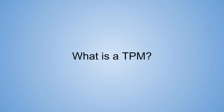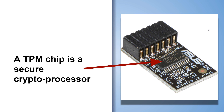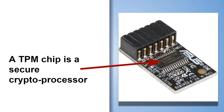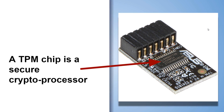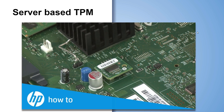So what is TPM? TPM is fundamentally a secure crypto processor. Here's an example with ASUS — this is a module you can buy and plug into your ASUS motherboard, adding TPM components to it. This is a type of server-based TPM on an HP motherboard where you can plug in a module for TPM capability. Most servers today have it baked in — you don't have to add a module.